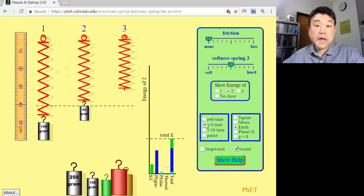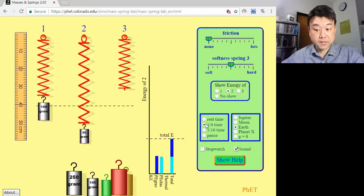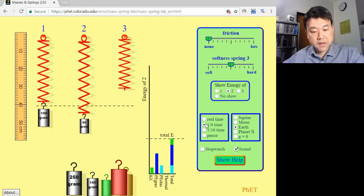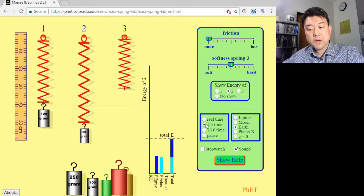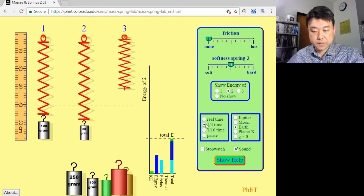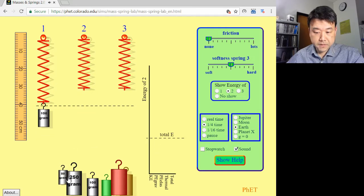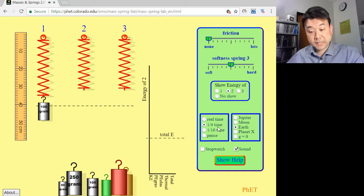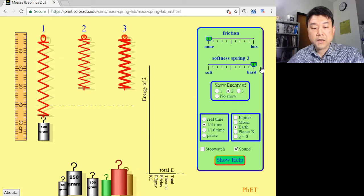The lighter mass means that the oscillation can happen faster. Given the same kinetic energy, the velocity is higher if mass is smaller. Another way to change the frequency is by changing the property of spring. If you use a more stiff spring, the natural frequency shifts to a higher frequency.